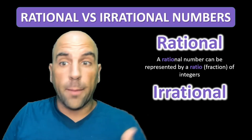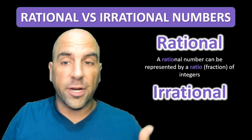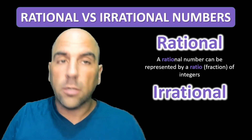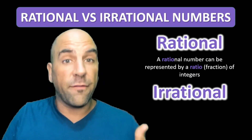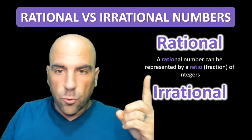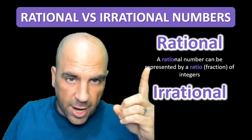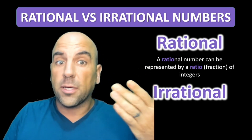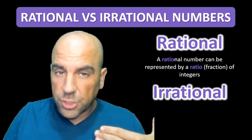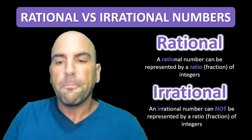A rational number can be represented as a ratio, a fraction, of integers. 'Ratio' is highlighted there in the word 'rational' because it can make a ratio, a fraction.